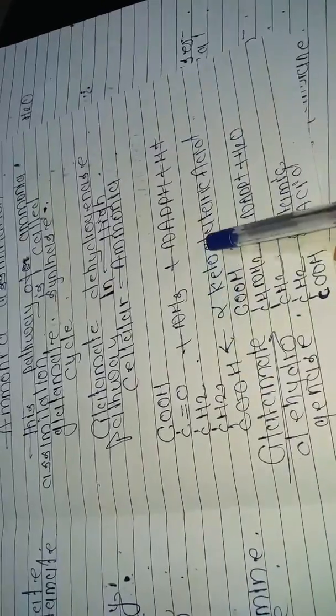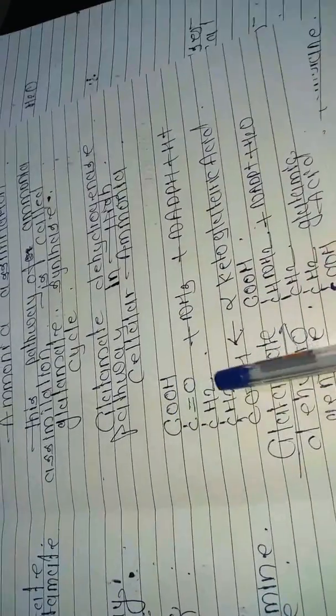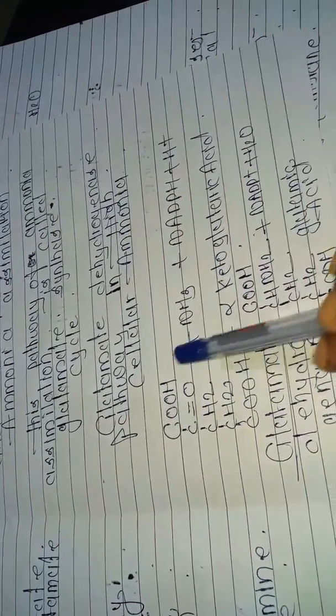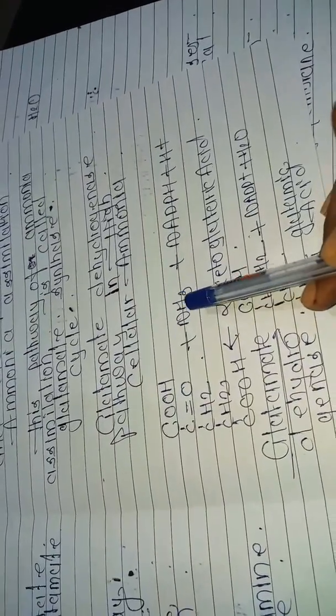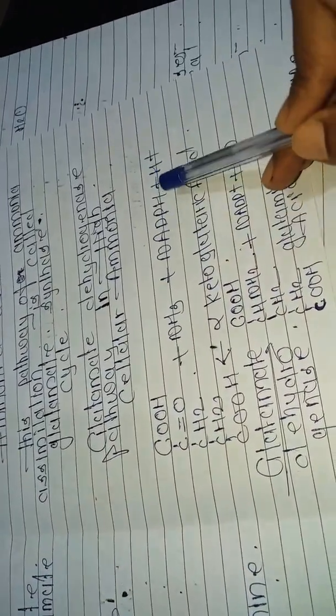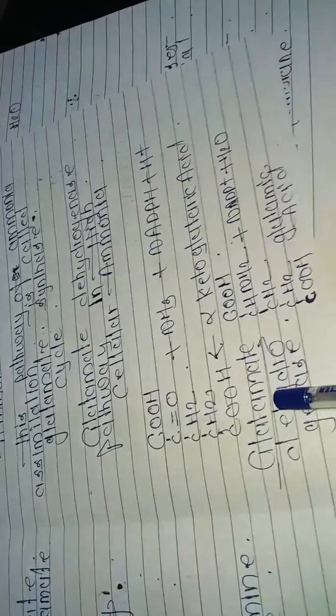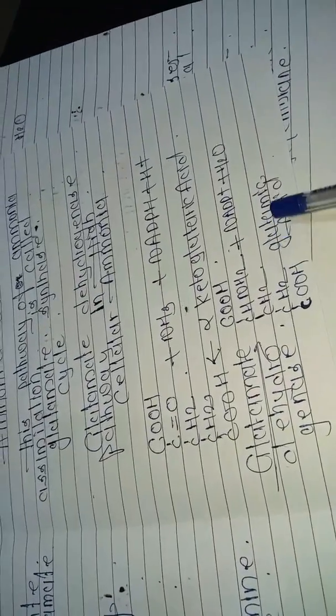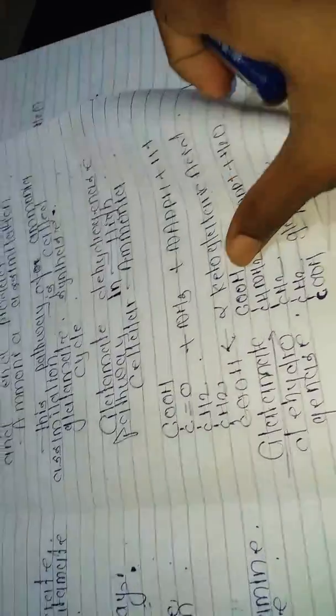Here alpha-ketoglutaric acid, a 5-carbon compound, plus NH4+ plus NADPH plus H+ in the presence of glutamate dehydrogenase produces glutamic acid plus NADP+ plus water.